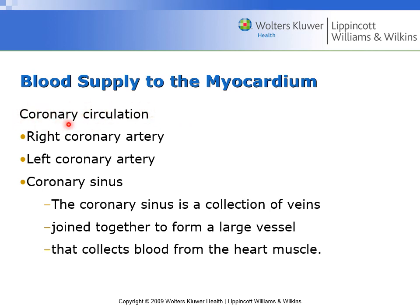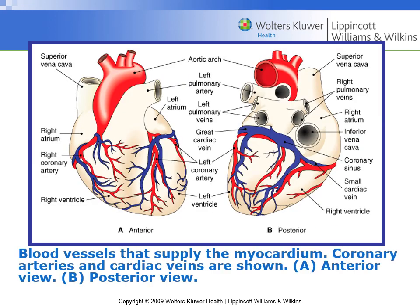The term 'coronary' refers to a crown, and the coronary circulation forms a crown around the heart — hence the name. It consists of the right and left coronary arteries and the coronary sinus, which is a collection of veins joined together to form a large vessel that collects blood from the heart muscle itself.